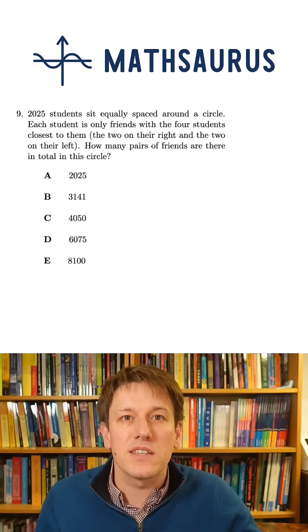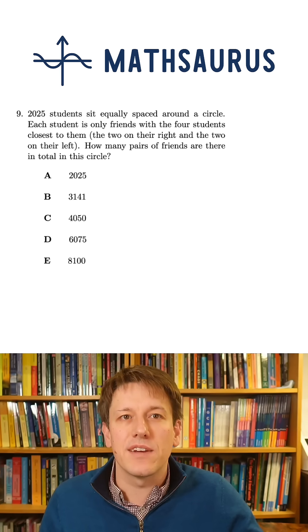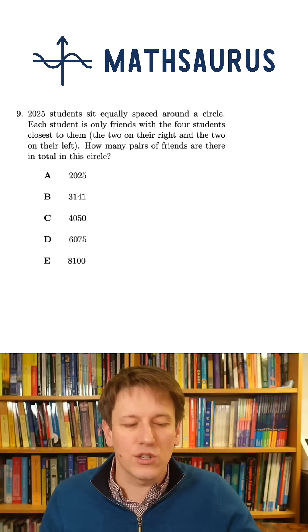2025 students sit equally spaced around a circle. Each student is only friends with the four students closest to them, the two on their right and the two on their left. How many pairs of friends are there in total in this circle?